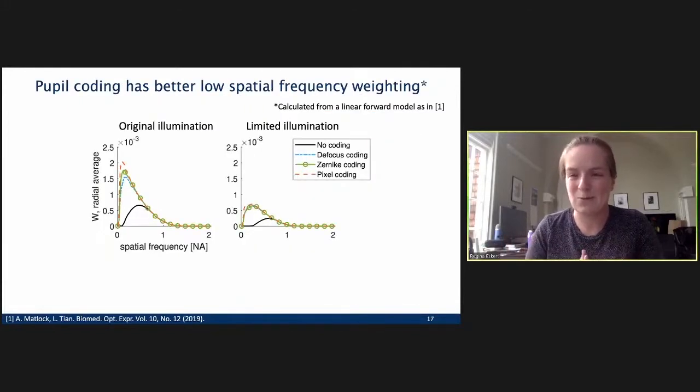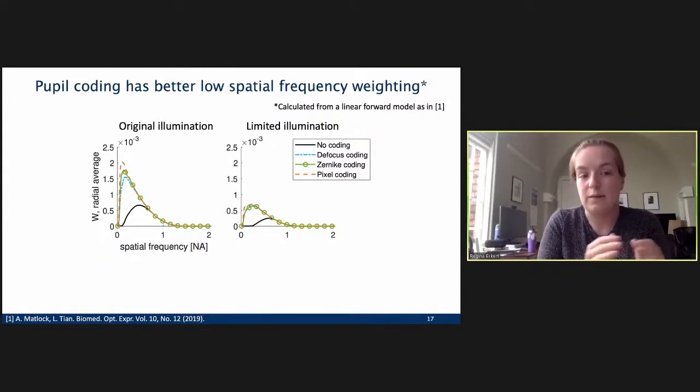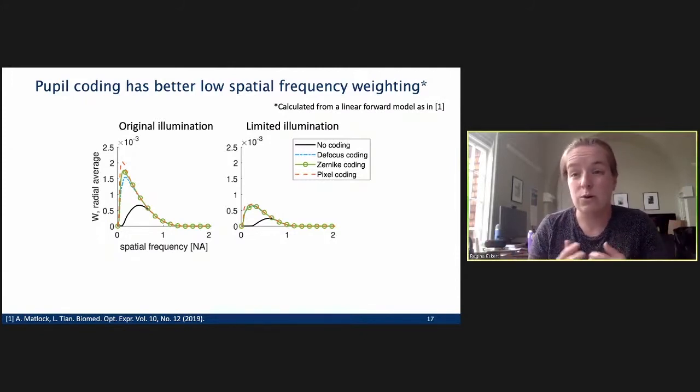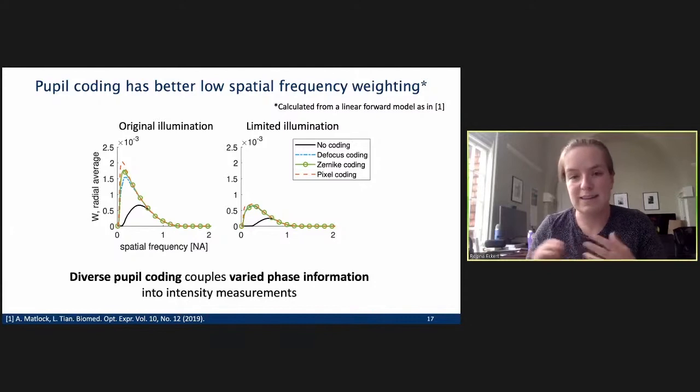All right. So, you might be wondering why exactly does that work? I've talked about measurement diversity, but what's the mechanism here? And I'm not going to talk about the math here exactly, but what we've done is taken some transfer function analysis. And we've seen that this pupil coding has actually a better low spatial frequency weighting in our measurement system. So, we can see here on the left, the original illumination case, and all of these systems are getting more information in that low spatial frequency, so near zero. But when we limit the illumination down, the no coding doesn't have very much weight in those low spatial frequencies, and therefore can't reconstruct it very easily. And digging into this a little bit more, we've seen that this is caused by having diverse pupil coding, which couples varied phase information, not the same phase information, into our intensity measurements to make this reconstruction easier.